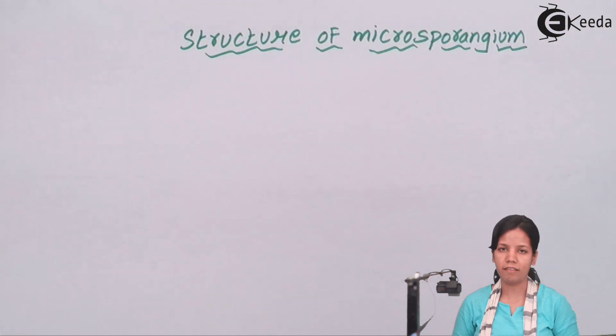Endothelium is the internal layer called the second layer. Then comes the middle layer. The middle layer basically consists of one to three layers of parenchyma cells. And we all have studied what parenchyma cells are capable of.